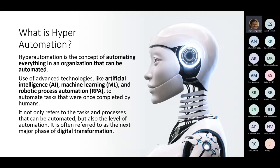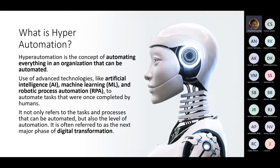Hyper automation can be implemented in multiple ways. The three modern components which form the foundation for this are: artificial intelligence, machine learning, and robotic process automation. Today's session is not about what artificial intelligence is — it's about how do you do automation with artificial intelligence and what are the options available.